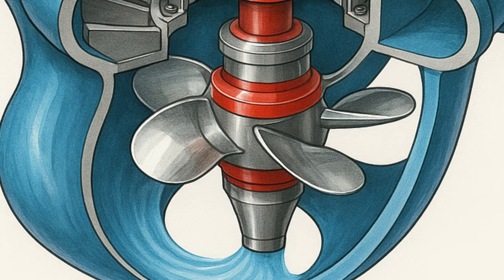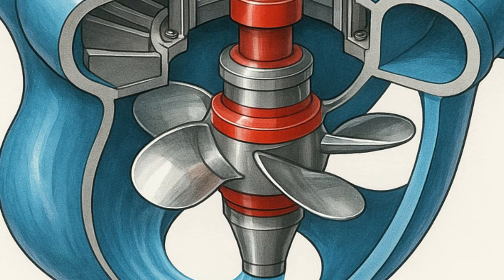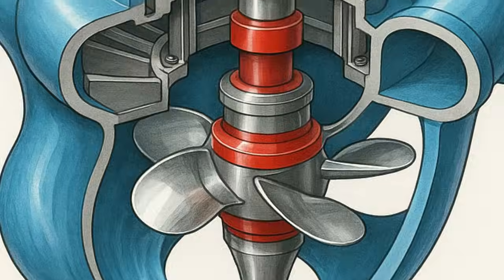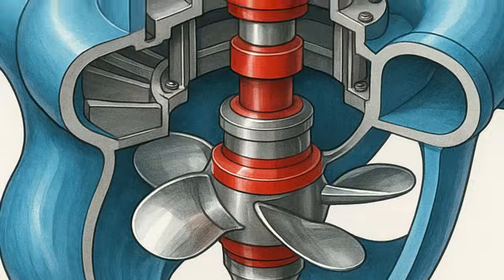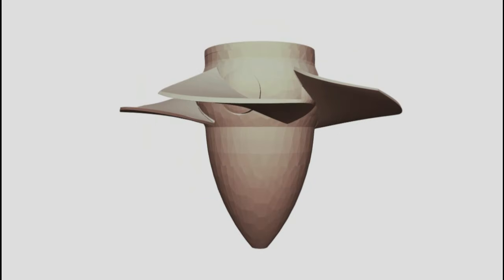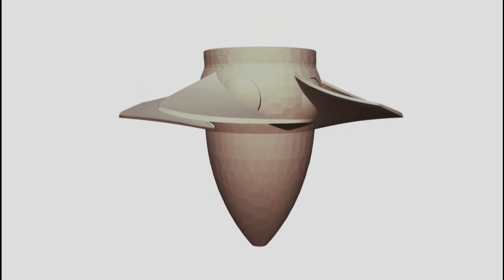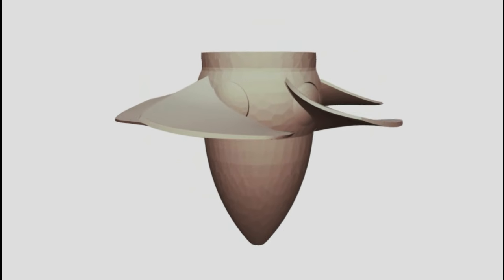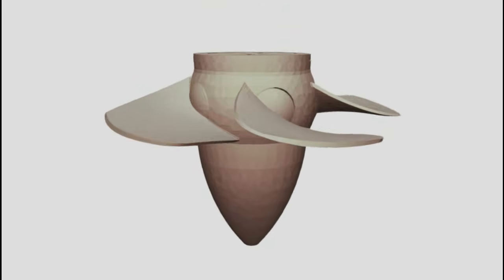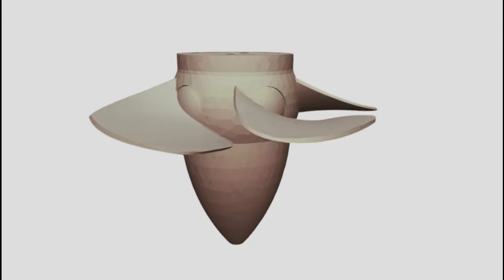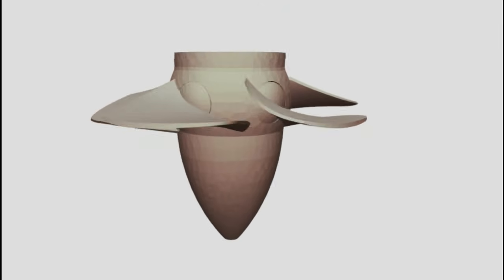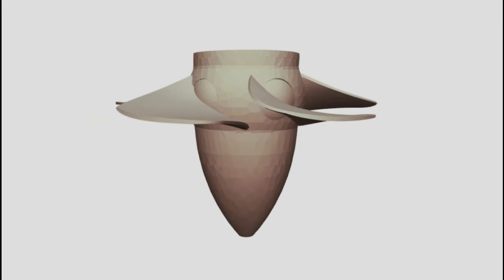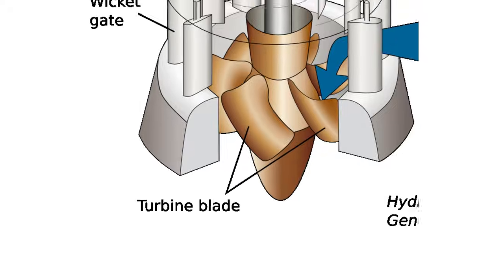A Kaplan turbine is a propeller type water turbine that uses adjustable blades to generate electricity from flowing water. Austrian professor Viktor Kaplan invented the Kaplan turbine in 1913.